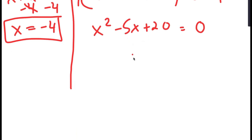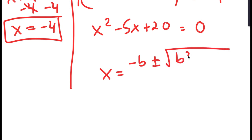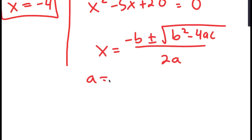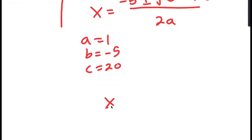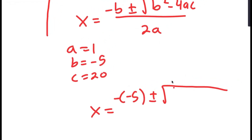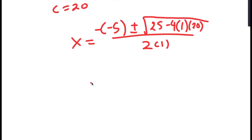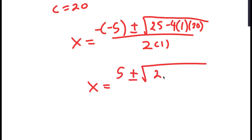To solve this, I'm going to use the quadratic formula, which is negative b plus or minus the square root of b squared minus 4ac, all over 2a. In this case, a is 1, b is negative 5, and c is 20. So I get x is equal to negative negative 5, plus or minus the square root of negative 5 squared, which is 25, minus 4 times 1 times 20, all over 2 times 1.